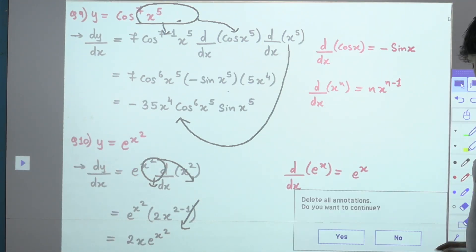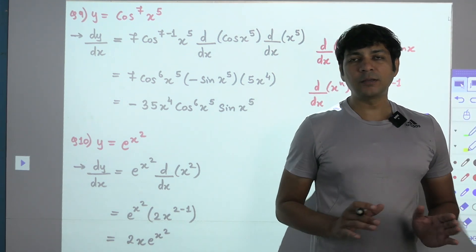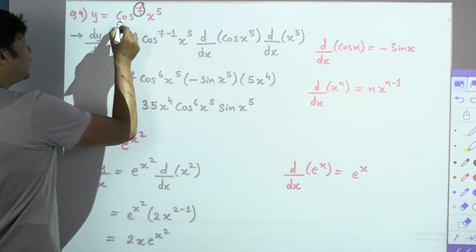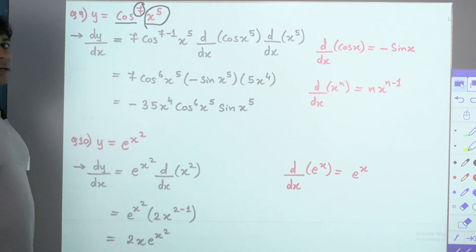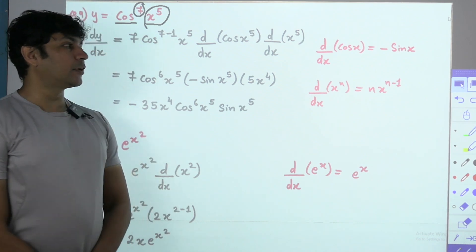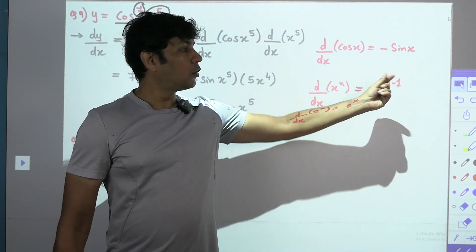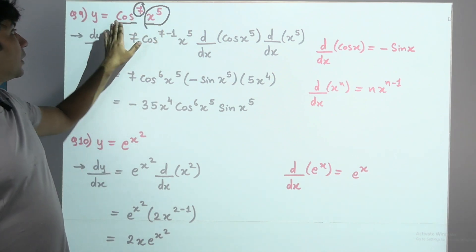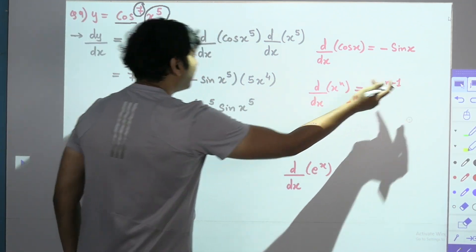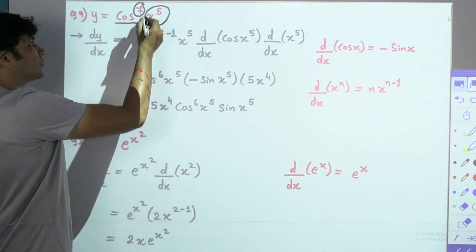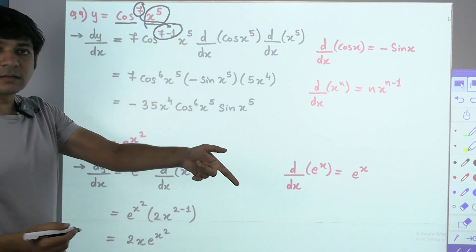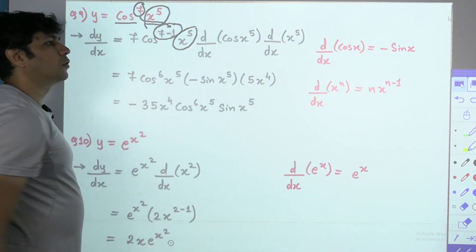Ninth — a unique problem. Until now you faced problems like y = cos(x²). But what if a number comes between the trigonometry and its constant, like cos⁷(x⁵)? Then treat it as x^n. Differentiation of x^n is n·x^(n−1). Here n is the power 7 and x is cos(x⁵). Differentiation gives 7·cos^(7−1)(x⁵), keeping x⁵ as is. That is a trick here.